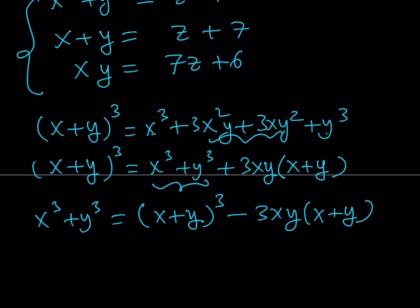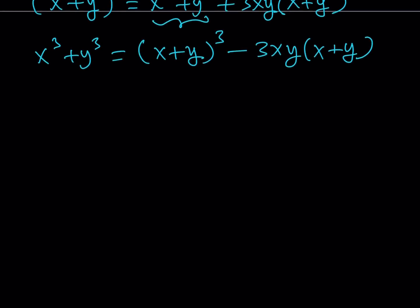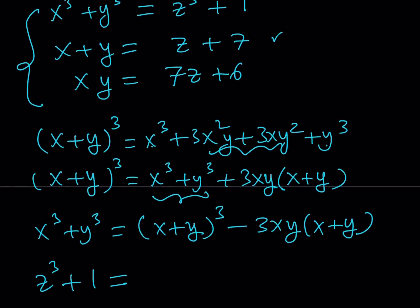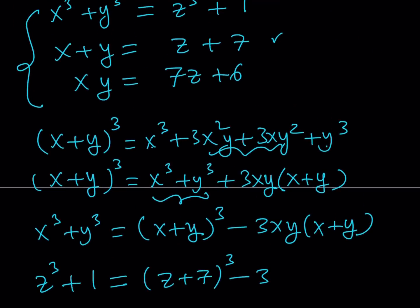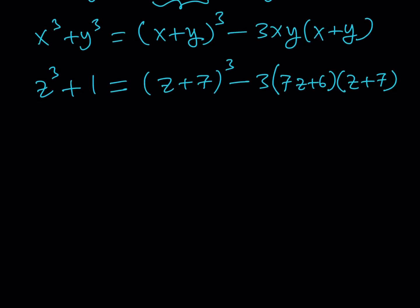Okay. So we have the following system. Let's go ahead and substitute what x cubed plus y cubed is, which is z cubed plus 1. So we have z cubed plus 1 on the left-hand side. On the right-hand side, I have x plus y quantity cubed, but x plus y can be written as z plus 7. So I can write it as z plus 7 quantity cubed minus 3 times xy, and as you know, xy can be written in terms of z as well. So I can replace it with 7z plus 6, and then x plus y again can be replaced with z plus 7. Great. Now we have this equation, which is in a single variable, which is z. Let's go ahead and solve for z.